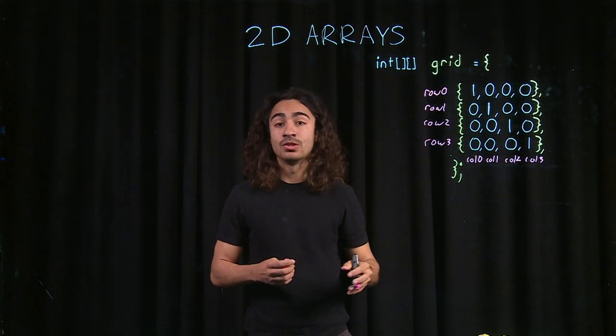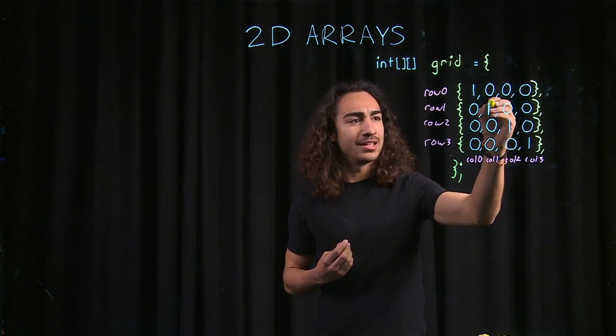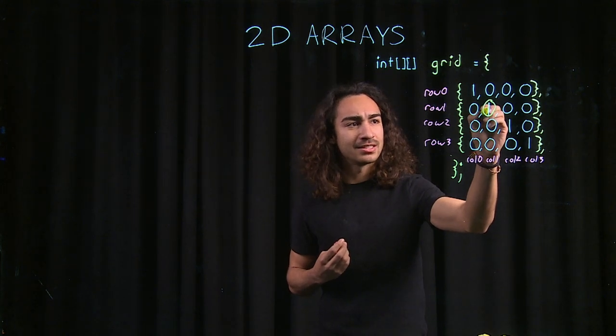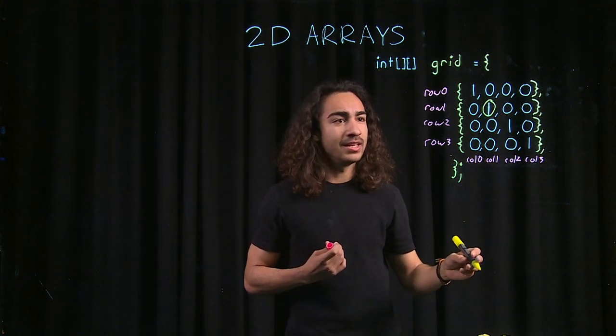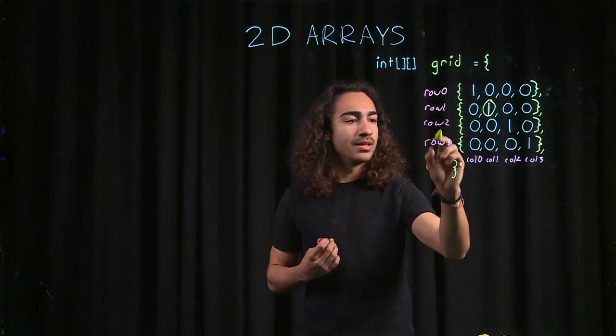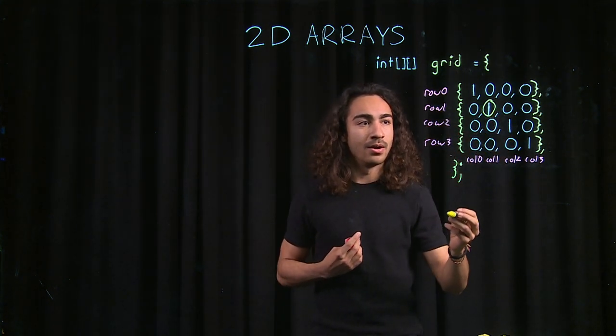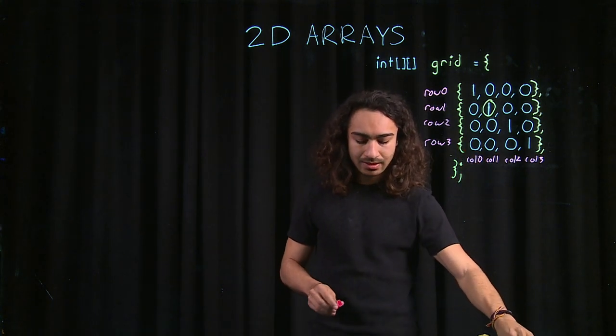Now, if we were to just want to grab one of the indexes in this two-dimensional array, let's say we want this particular index. We could just say, in my grid, I want to get row 1, column 1, and that will give us our number, this index.